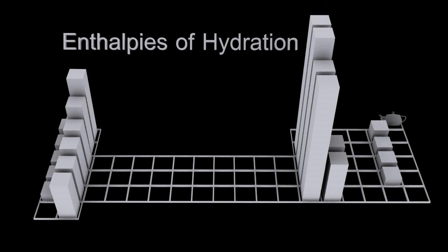There aren't any obvious patterns except that as you go down a group, the magnitude of the enthalpies of hydration decreases. They get smaller.